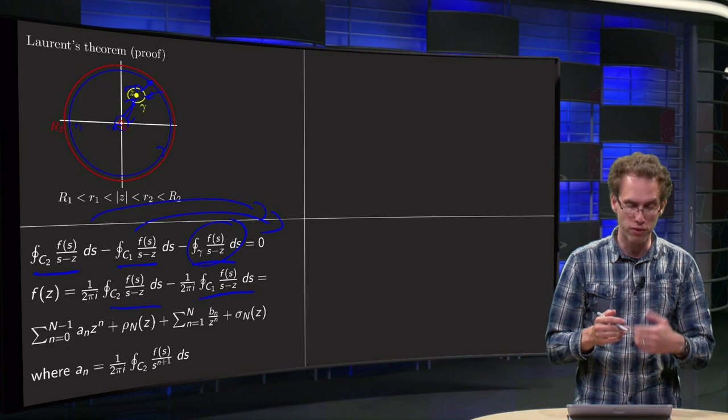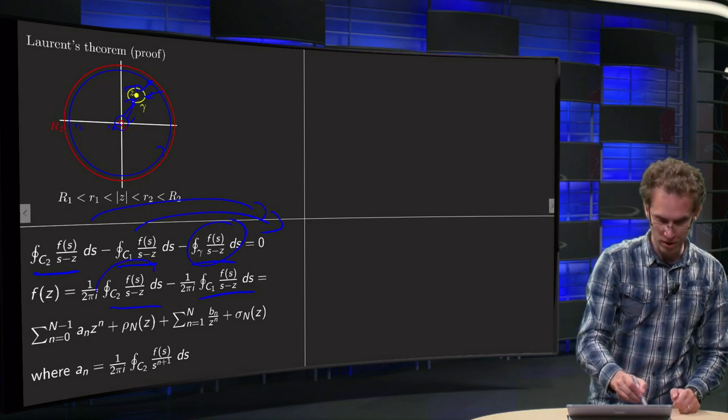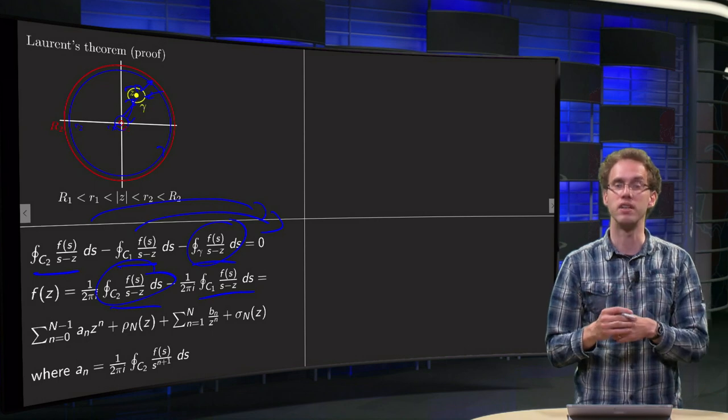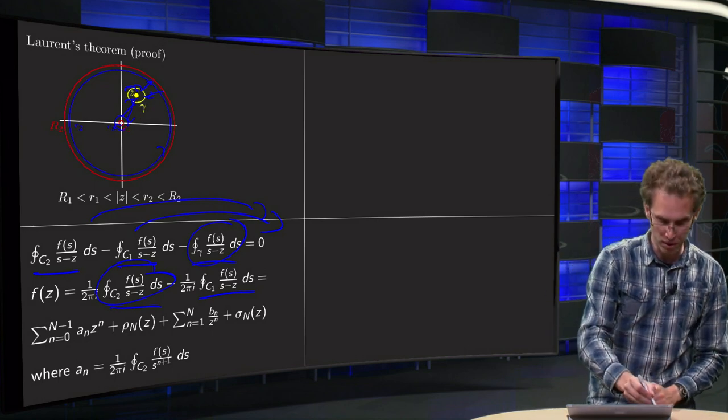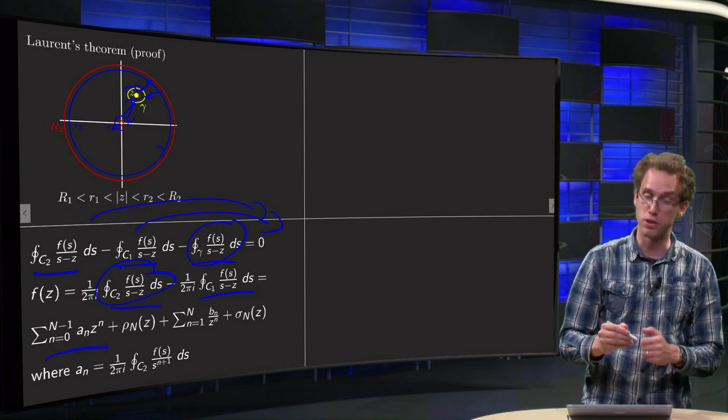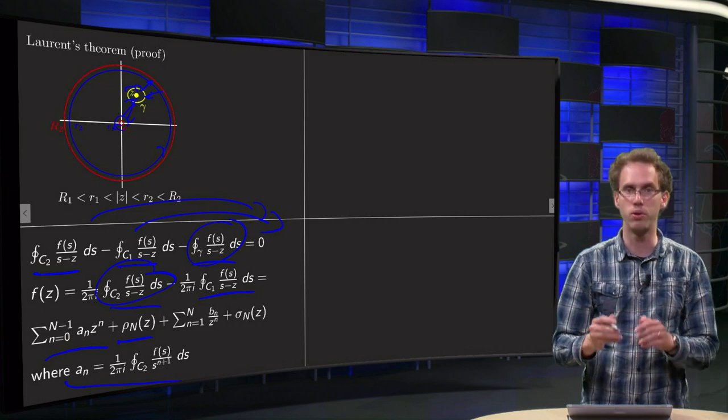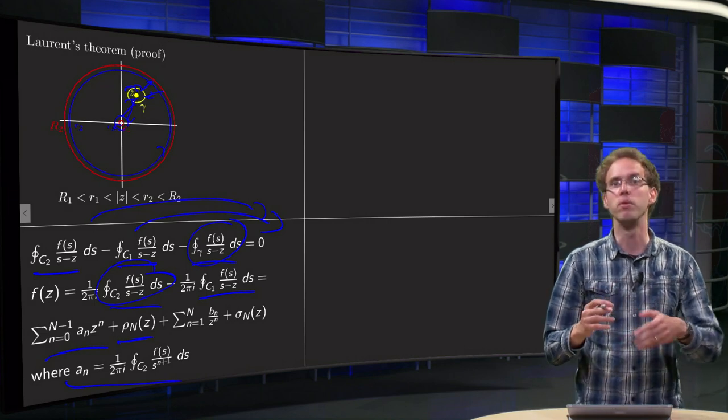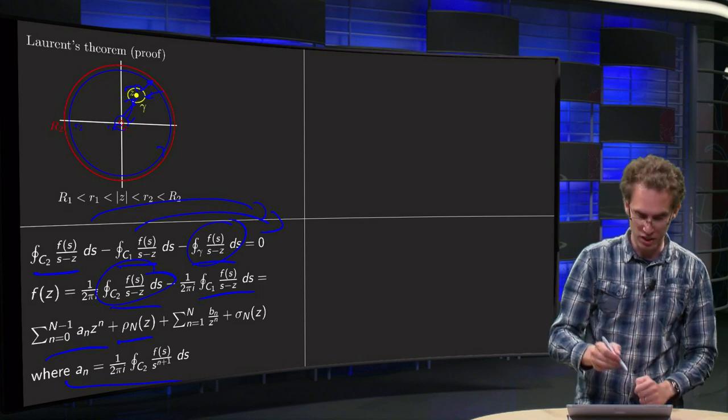Now this first integral, this one over here along the outer one, that goes the same as in the case of your Taylor polynomial. That will just give you this first part, sum with the positive powers, with the nth power, plus this remainder term. That's the one you already know. If you don't remember, just watch back the part about the Taylor series.